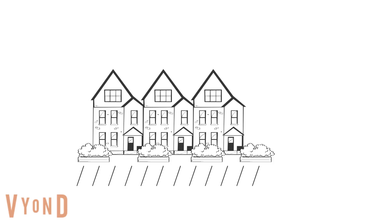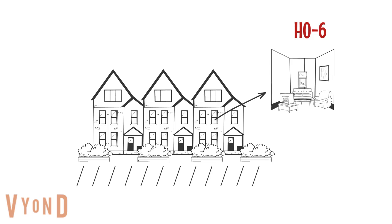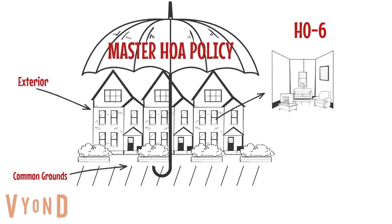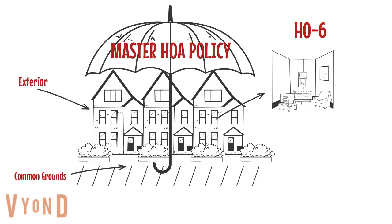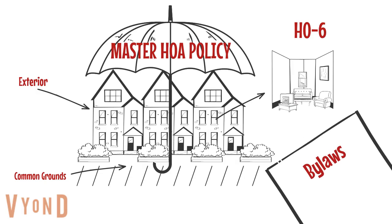A townhome or condo policy is called an HO6 in insurance jargon. An HO6 will cover the interior, or studs-in, of your unit. Having this type of policy assumes there is a master homeowners association policy that will cover the exterior and common grounds. If you are unsure, the HOA bylaws will typically lay out your responsibility as a unit owner.